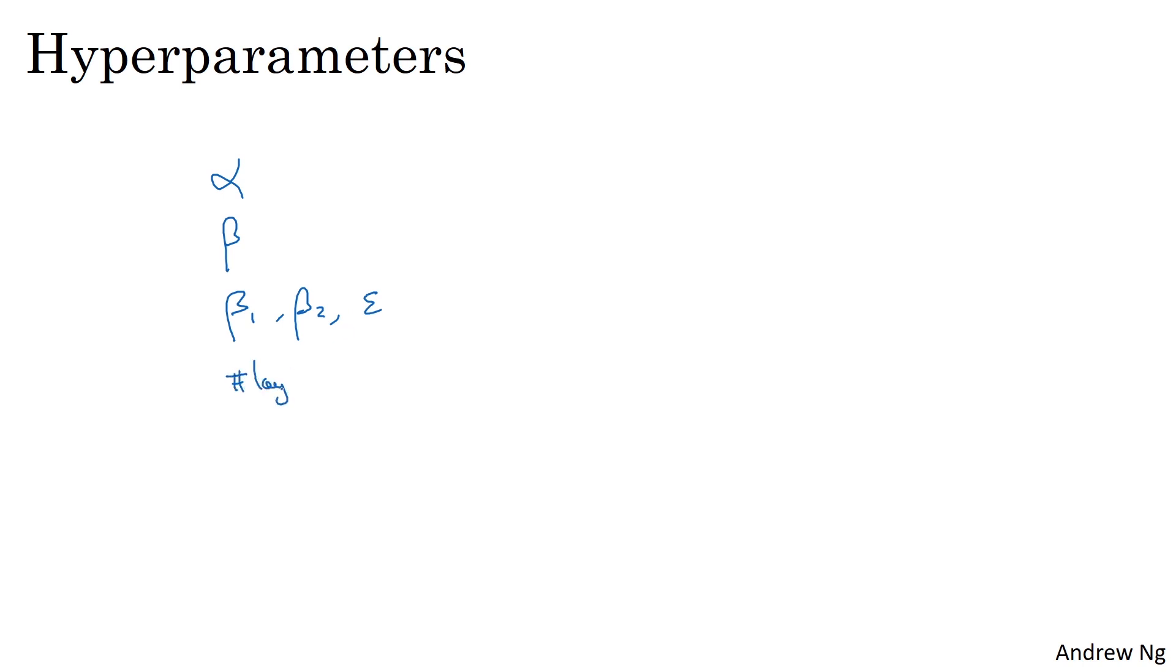Maybe you have to pick the number of layers. Maybe you have to pick the number of hidden units for the different layers. And maybe you want to use learning rate decay, so you don't just use a single learning rate alpha. And then, of course, you might need to choose the mini-batch size.